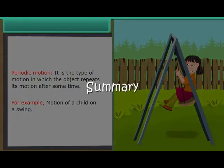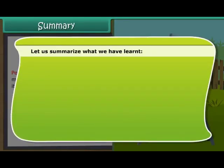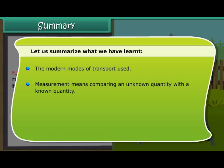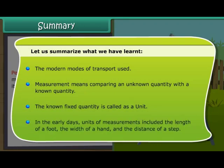Summary. Let us summarize what we have learnt. The modern modes of transport. Measurement means comparing an unknown quantity with a known quantity. The known fixed quantity is called a unit. In the early days, units of measurements included the length of a foot, the width of a hand and the distance of a step.